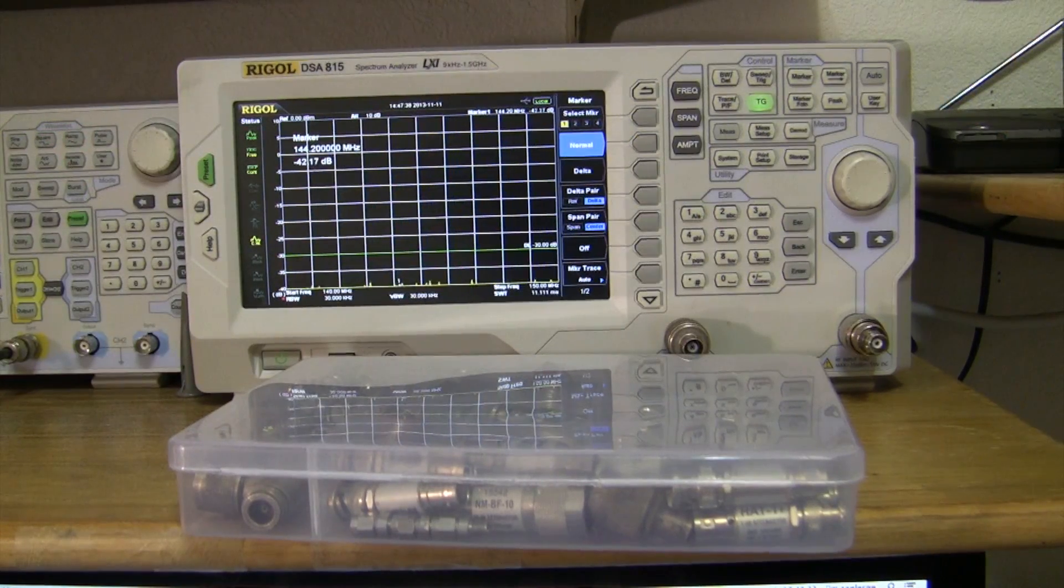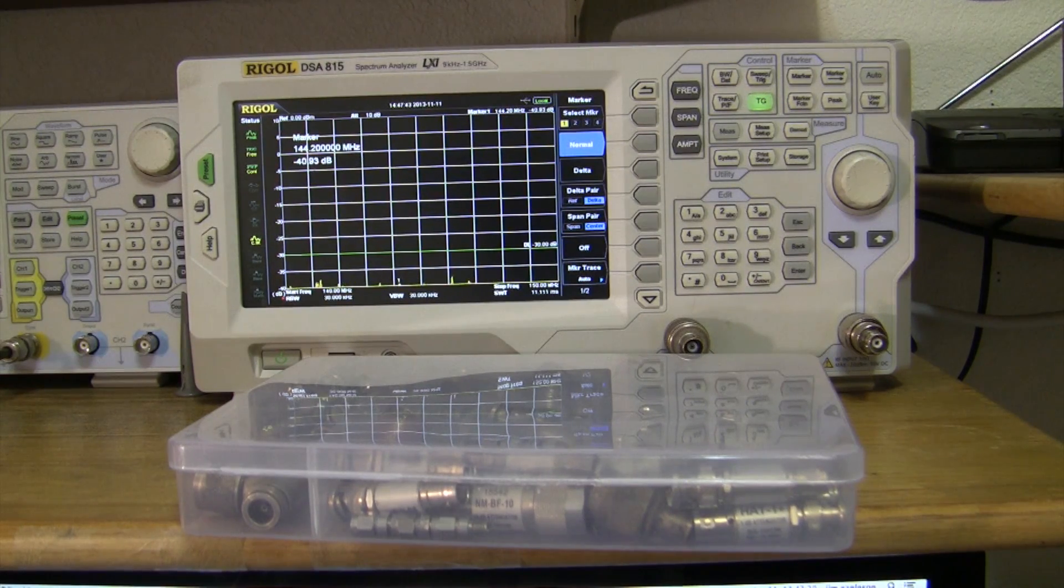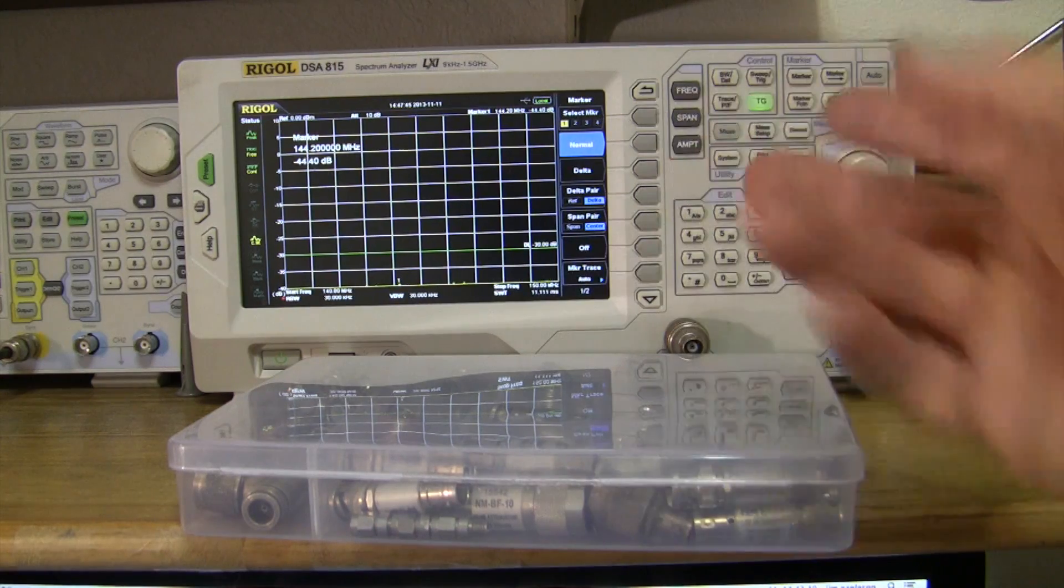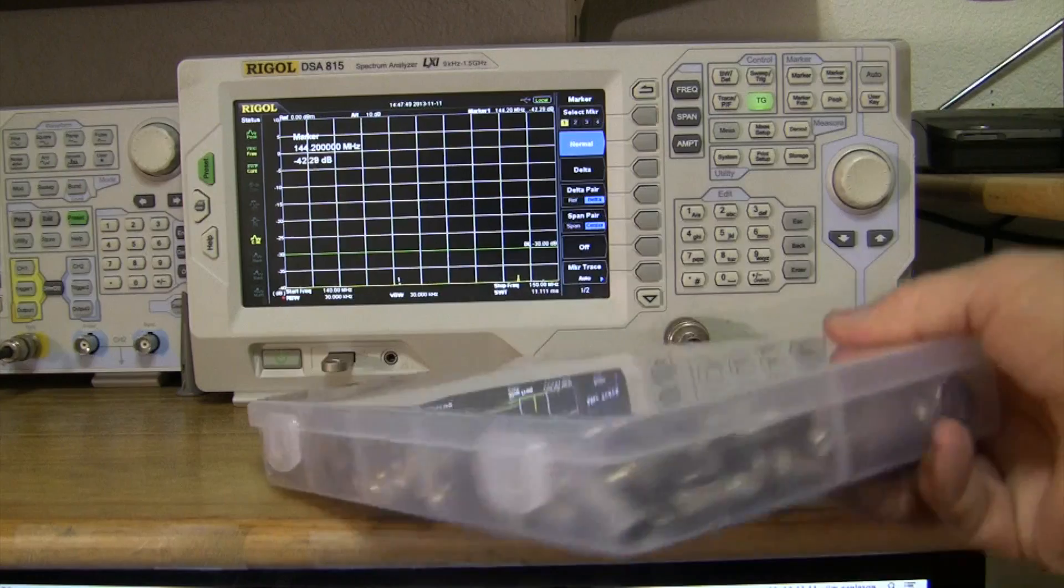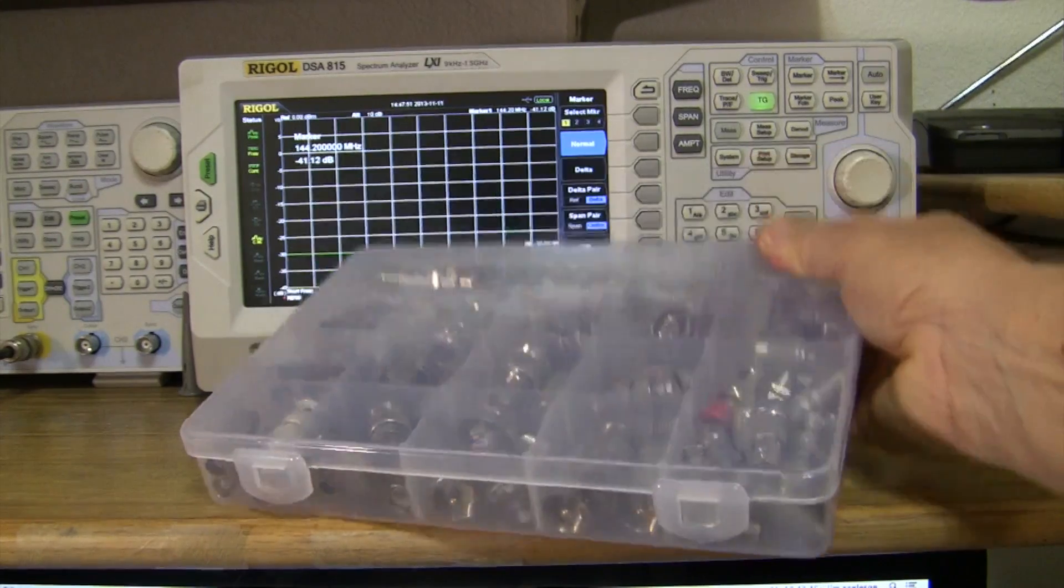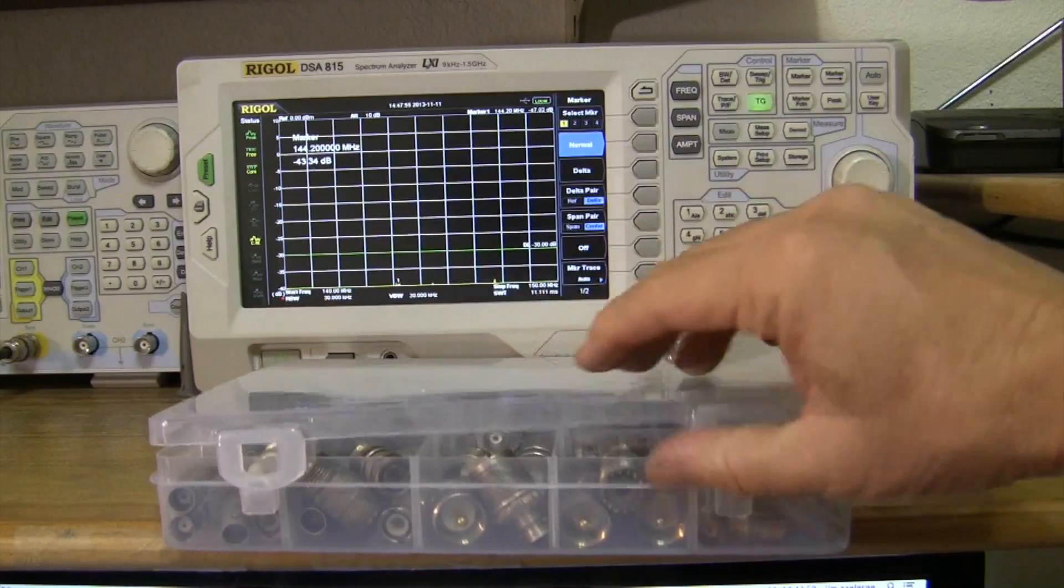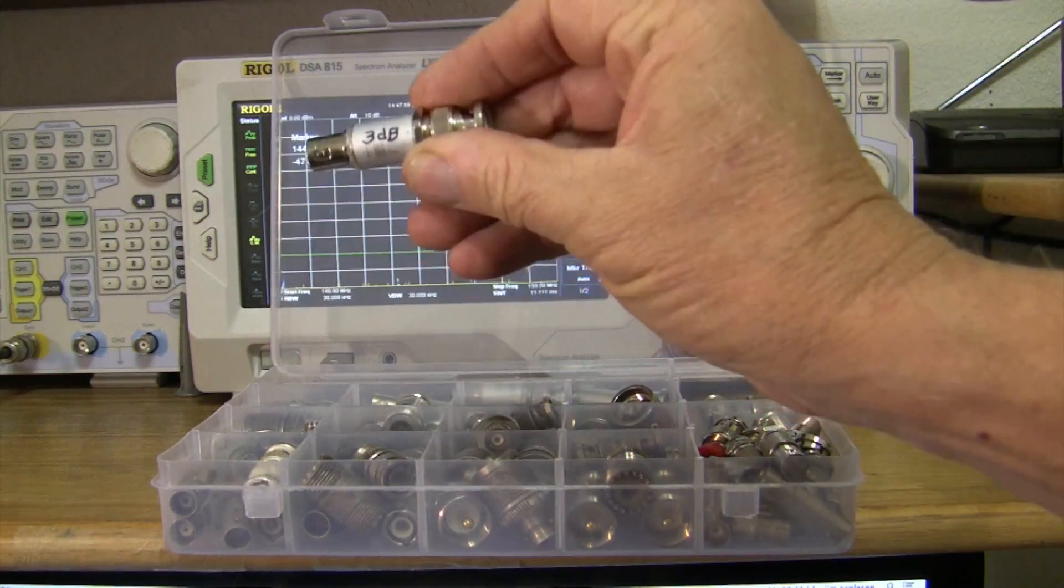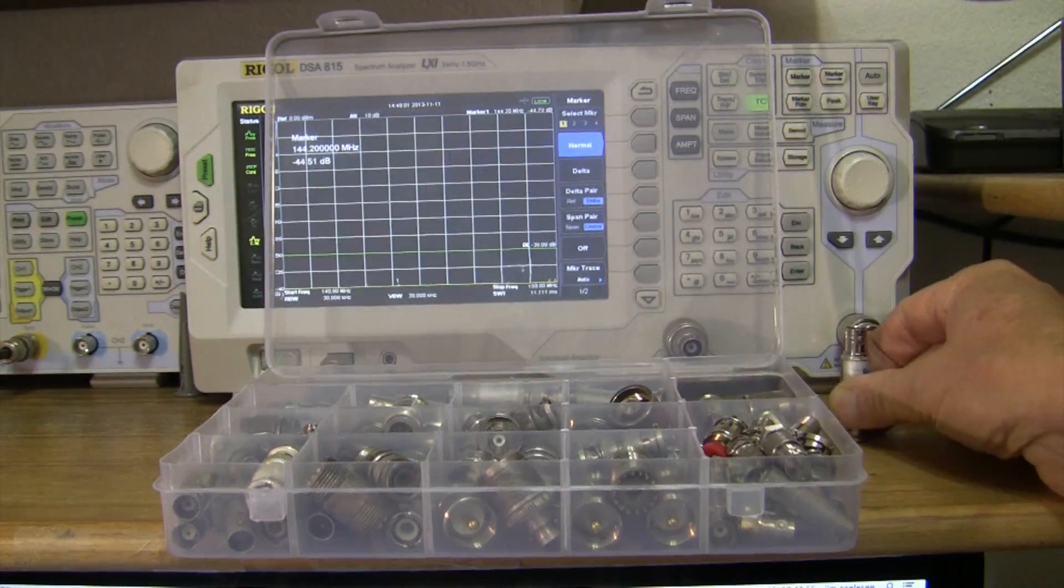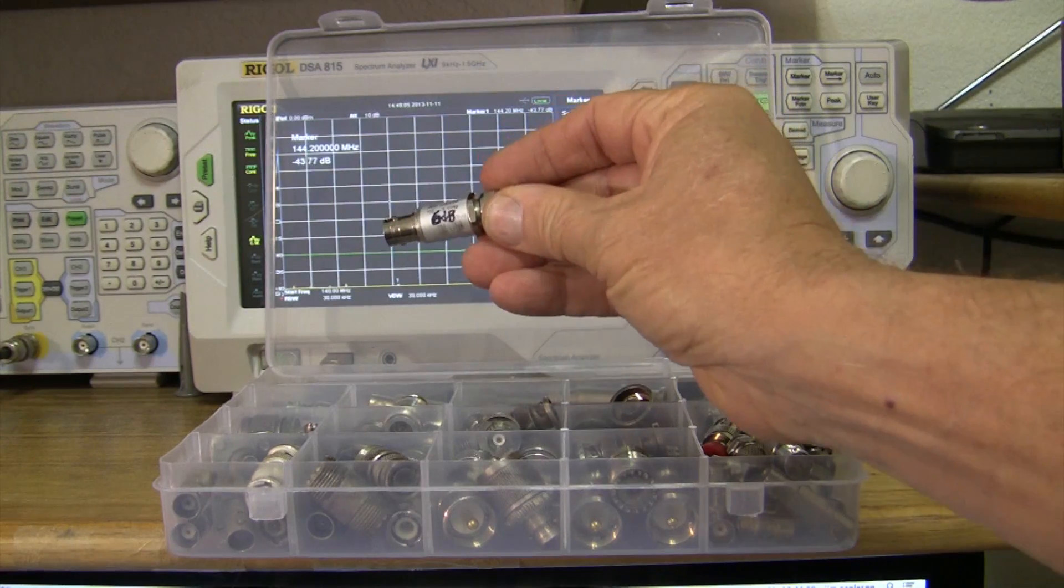Because the UHF connector is not a BNC connector, and most of my instrumentation has been set up for that, I have a box of various adapters here that I'm going to use to set this up. So I'll open it up. I know I need a 3dB pad, so I'm going to pull that out. I know I need a 6dB pad, so I'm going to pull that out.